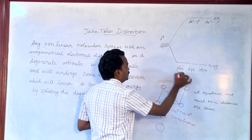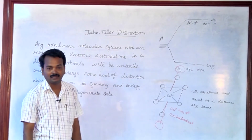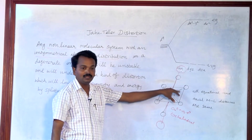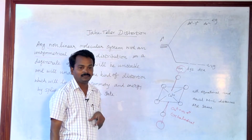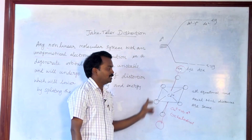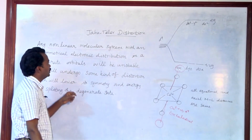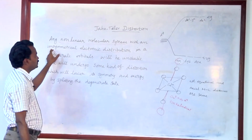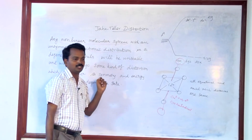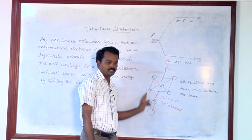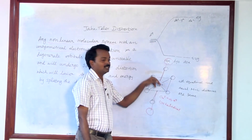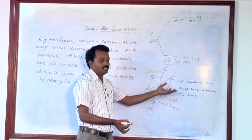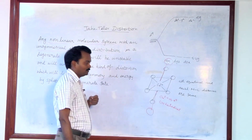Instead it will look somewhat distorted in nature — this is called the distorted octahedral. Before that it was a regular octahedral, but because of the unsymmetrical electronic distribution, this perfect octahedral will be distorted into a distorted one.